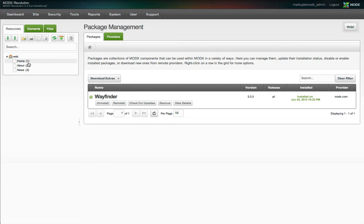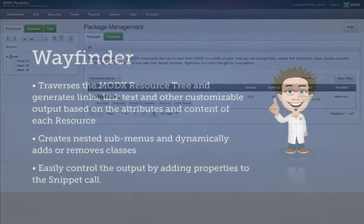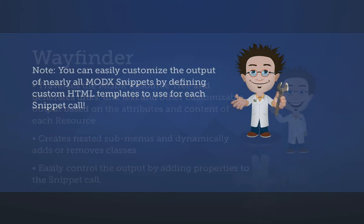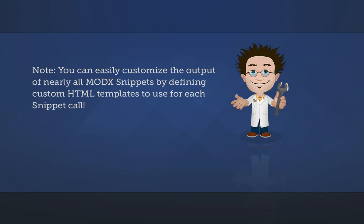How do we achieve this? Well, like everything in MODX, there are a lot of different ways to do it, but we're going to use the Wayfinder snippet. Wayfinder is a menu builder. It traverses the resource tree, creating links, link text, and other attributes based on the resource's attributes and properties that we set in the snippet call. It also creates submenus and adds active classes, among other things. Additionally, the output is 100% customizable. You can tell Wayfinder to generate those links and menus using whatever HTML you desire. Nearly all MODX snippets are customizable this way, making them unbelievably flexible and powerful.